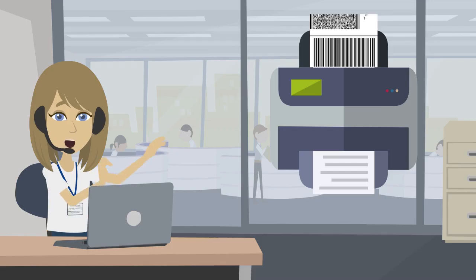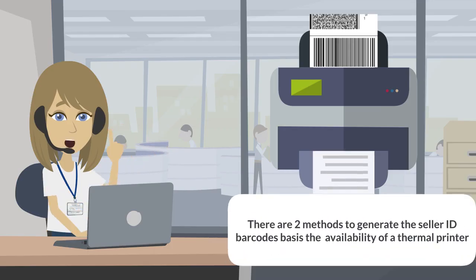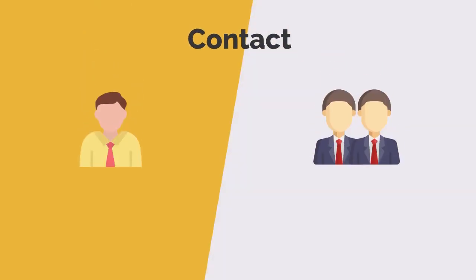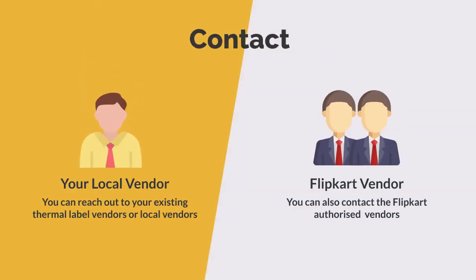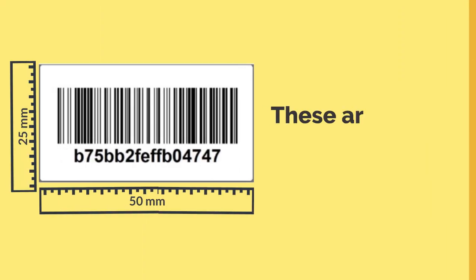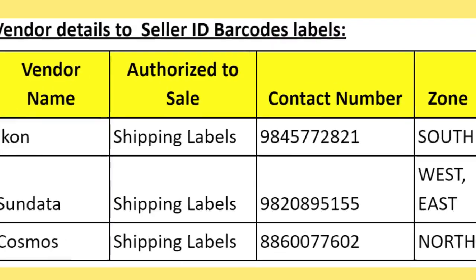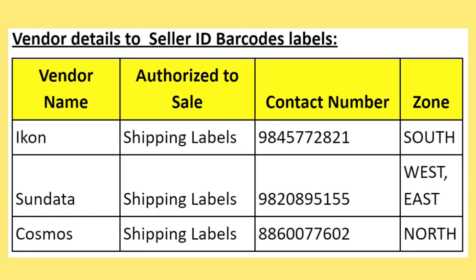There are two methods to generate the Seller ID Barcodes depending on the availability of a thermal printer. Method 1: If you do not own a printer, you can reach out to your existing thermal label vendors or contact Flipkart authorized vendors to procure Seller ID Barcodes in bulk, or you can also purchase from your local vendors. These labels are in 50mm by 25mm size. Here are the vendor details for Seller ID Barcode labels.